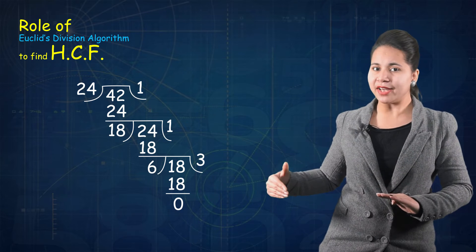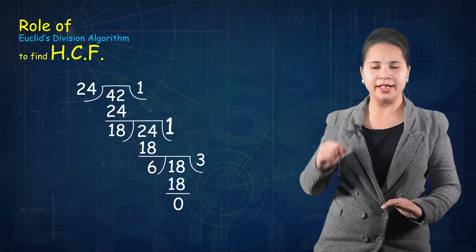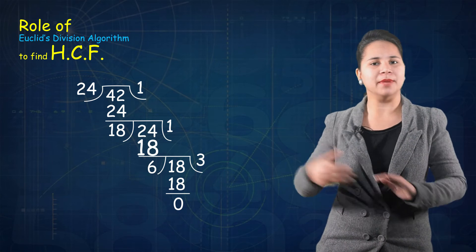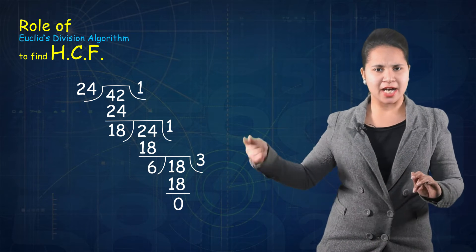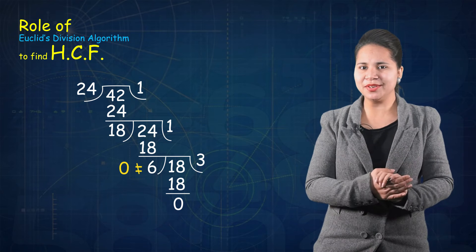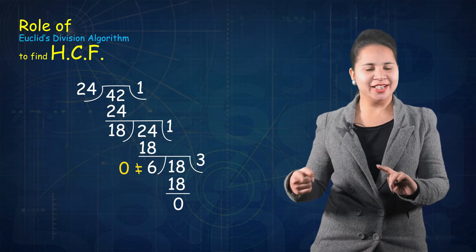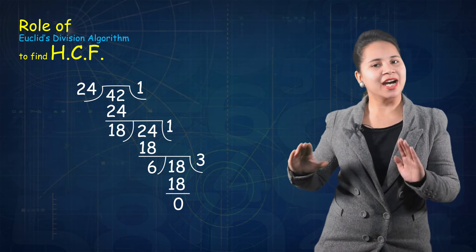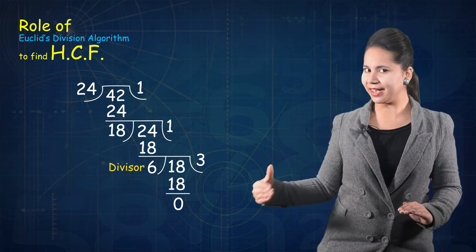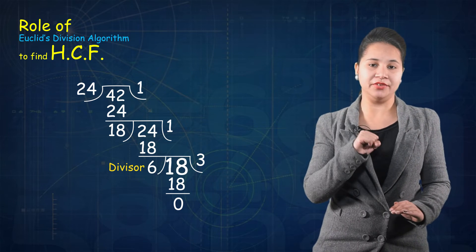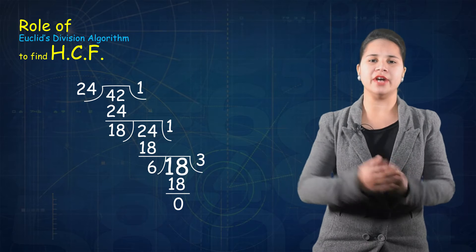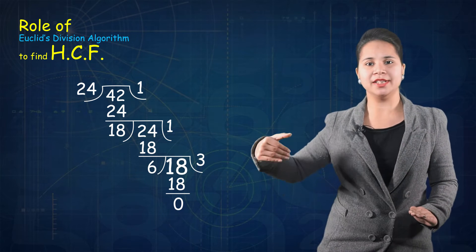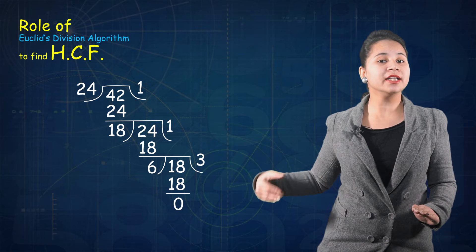Now divide 18 into 24. It goes one time. 18 once is 18. Subtract 18 from 24, and the remainder is 6. Here also the remainder does not equal 0, so the division process is further proceeded. 6 becomes the new divisor, and 18 becomes the new dividend. Now divide 6 into 18. It goes three times. Six threes are 18. Subtract 18 from 18.